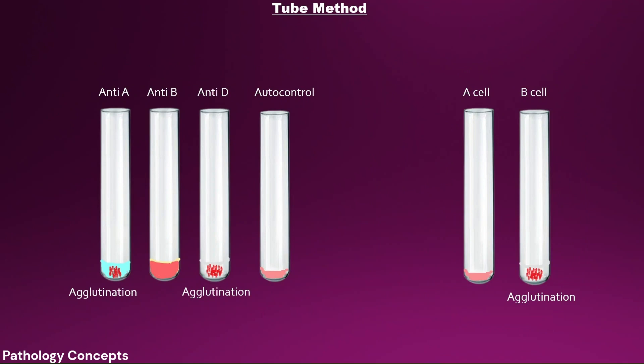After the method, here is our result. The agglutination is seen in the anti-A sera, anti-D sera, and the B cell in the reverse blood group. So our blood group is A positive.